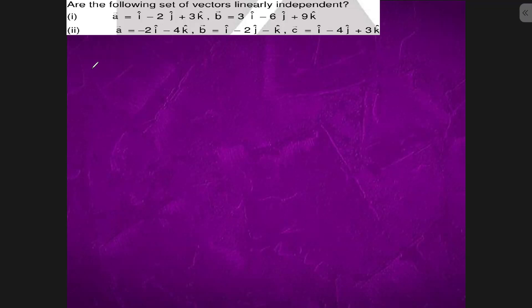If a vector equals lambda times B vector, then it is linearly dependent. So a is 1, -2, 3 and B is lambda times 3, -6, 9. If we take 3 common, we get 1, -2, 3. We can see that they are the same. If you put lambda equals 1/3, they are same, that is they are linearly dependent.